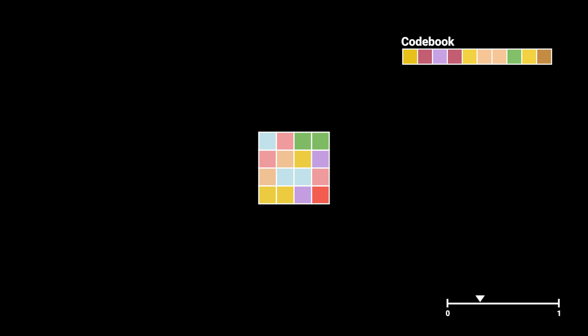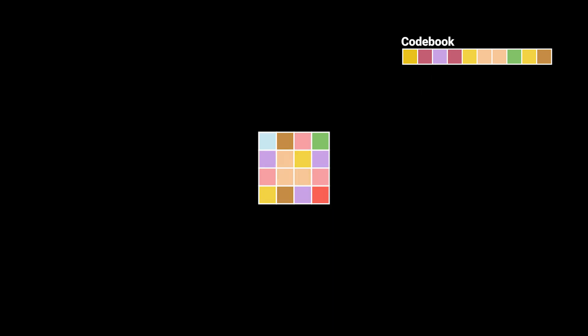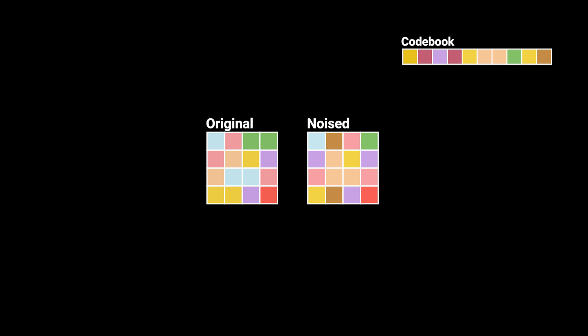What we do during training is the following. For every image in our dataset, we first encode it with the VQGAN to get the tokens. Then we noise a random number of tokens by replacing them with other random tokens from the codebook. Say our latent image has a shape of 4×4 tokens after VQGAN encoding, and our codebook has a size of 10. We randomly draw a ratio between 0 and 100% — the timestep — of how many tokens to noise. Say this ratio is 50%: we take 50% of our tokens and replace them with other random tokens from the codebook. So now we have our original tokens and the noised tokens.